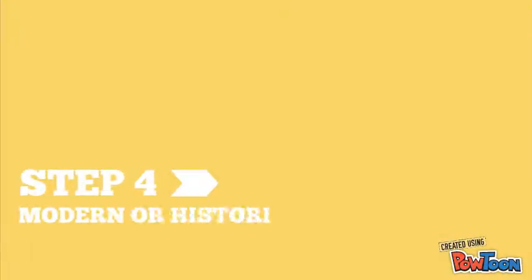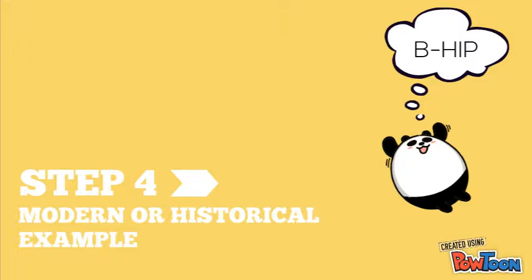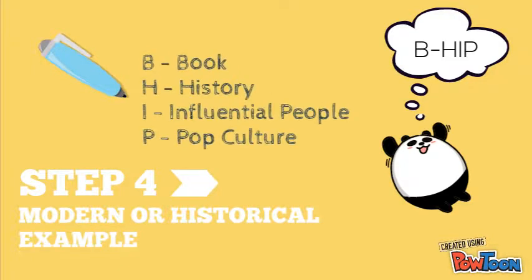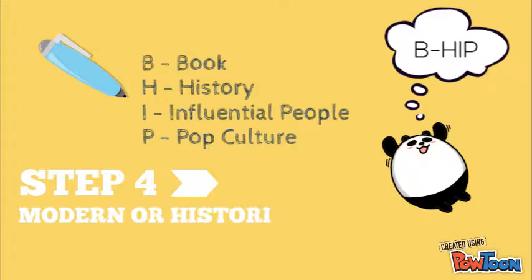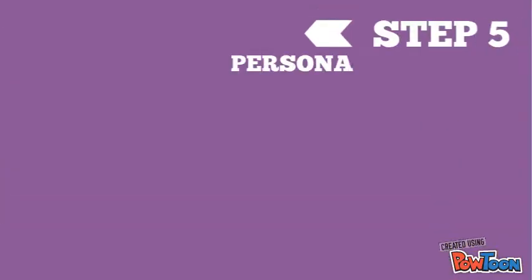Now you're ready to write your first body paragraph. Your first body paragraph needs to be built around a modern or historical example that ties back to the prompt. To do this, you can use the acronym VHIP — you can pick an example from a book, history, an influential person, or pop culture. For example, for our essay on never giving up, I might use the example of Harry Potter and discuss how his perseverance was key to his success in defeating Voldemort.